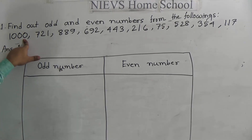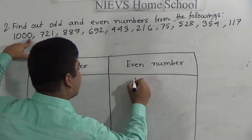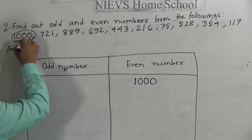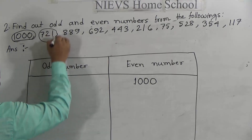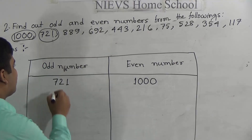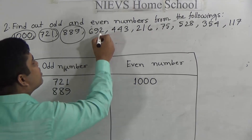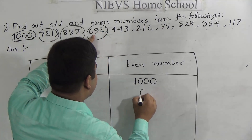1000 — last digit is 0, which is even, so 1000 is even. Write 1000 in the even number box. 721 — last digit is 1, which is odd, so 721 is an odd number. Write 721 in the odd box. 889 — last digit is 9, which is odd, so 889 is an odd number. 692 — last digit is 2, which is even, so 692 is even. Write 692 in the even number box.